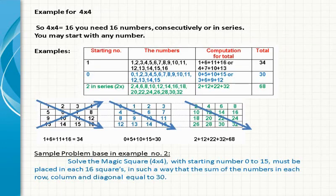Example for 4x4. So 4x4 gives you 16, we need 16 numbers, consecutively or in series. You may start at any number. Please take a look at the table for a lot of examples and how to get the sum or total. Based on the example you can make your own problem solving on Magic Square 4x4.